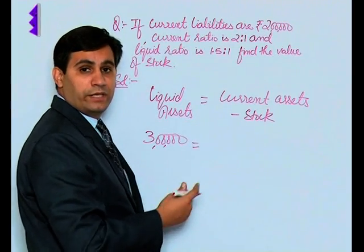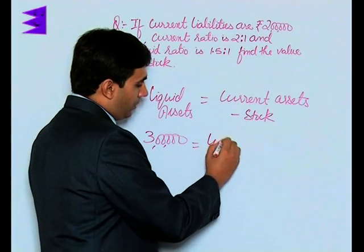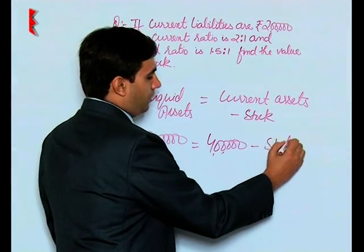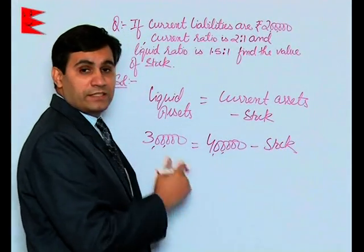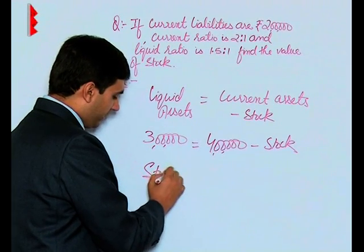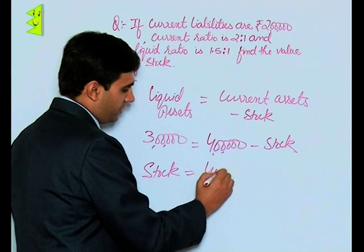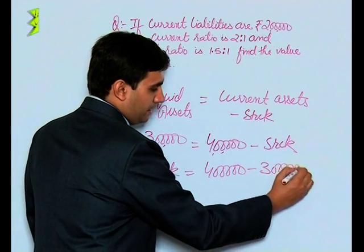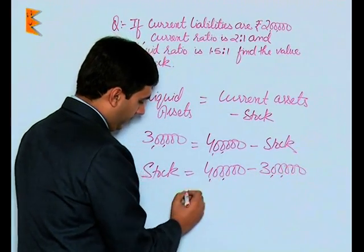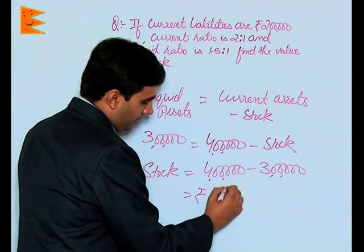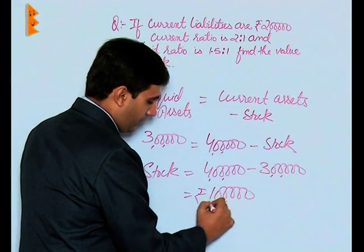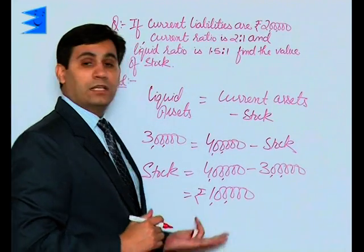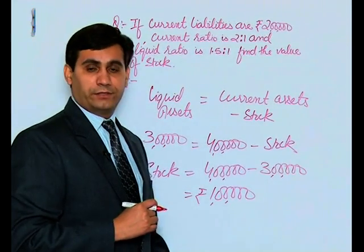The liquid assets calculated were rupees 3 lakhs and current assets were rupees 4 lakhs. So: 3 lakhs equals 4 lakhs minus stock. Shifting sides, bringing stock to this side, it becomes positive. The value of stock is 4 lakhs minus 3 lakhs, which is equal to rupees 1 lakh. Based on this information, we can say that the value of stock is rupees 1 lakh.